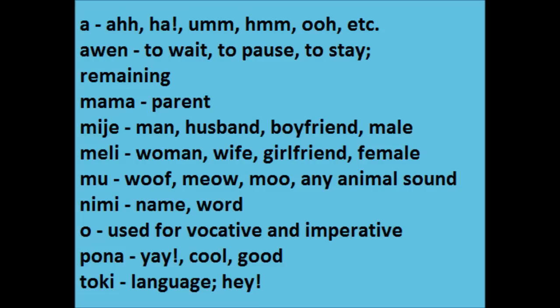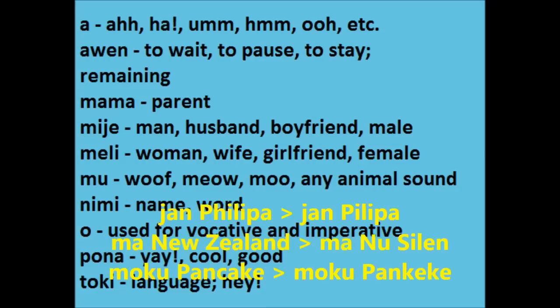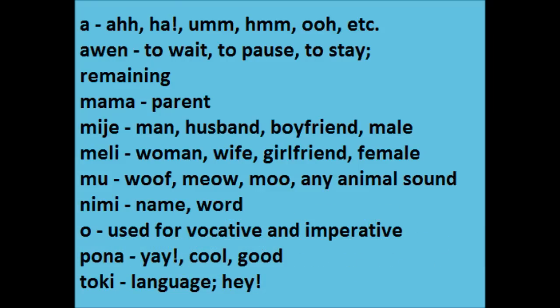You don't have to memorize all of them, but memorizing some will be useful. Now, how to tokiponify a name: just get as close to how the name sounds as possible, using the syllable structure consonant plus vowel plus optional N, and only using Toki Pona letters. You can have a vowel at the start of the word. For example: 'jan Filipas', 'ma Nusilan' for New Zealand, 'moku pankeke' for pancakes. But please, other than names for people and places, do not overuse unofficial words — pancakes was an example only.